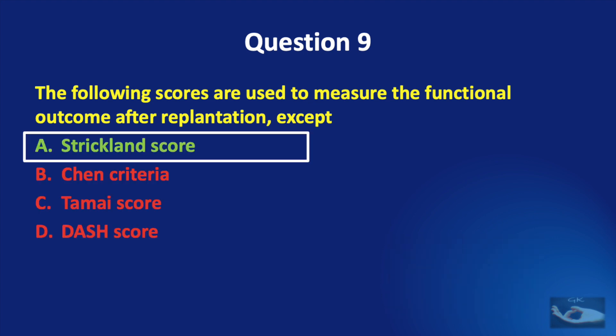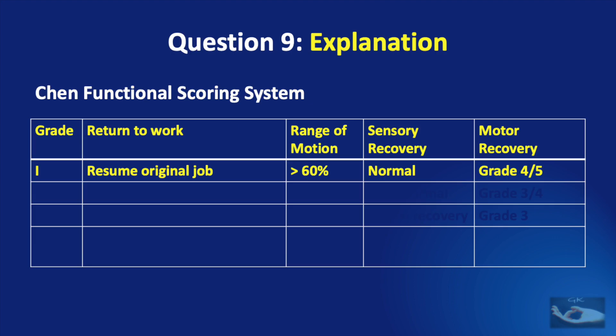The answer is the Strickland score. The Chen score measures outcome with regard to return to work, range of motion, sensory recovery, and motor recovery. Grade 1: patient able to resume original job with more than 60% range of motion, normal sensory recovery, and grade 4 or 5 motor recovery.